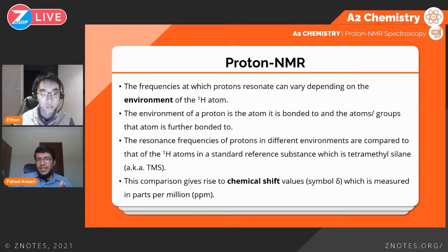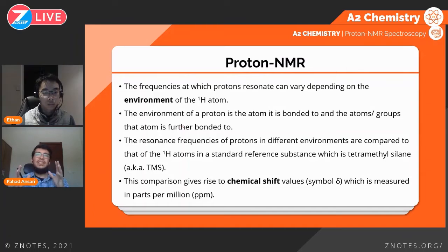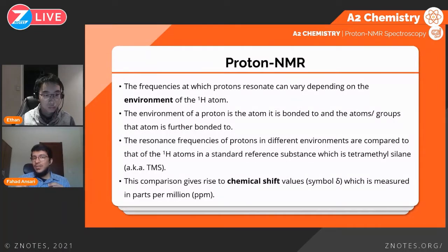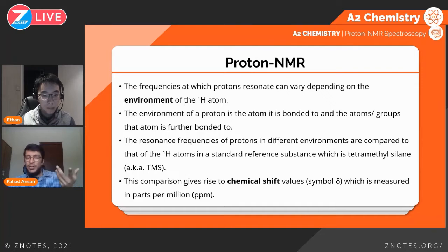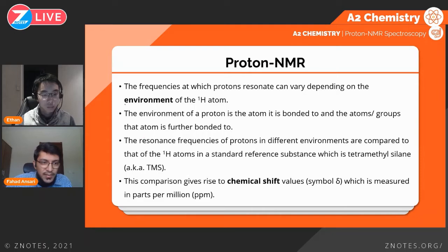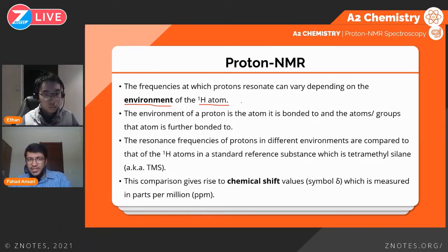In practice, we dissolve the substance being analyzed in a solvent, apply an external magnetic field, and study the radio frequencies at which certain protons begin to resonate. This identifies the particular environment that proton is in. An environment means what atom the proton is bonded to, and what other atoms are in the nearby vicinity. I'll explain what this environment means using ethanol as an example.